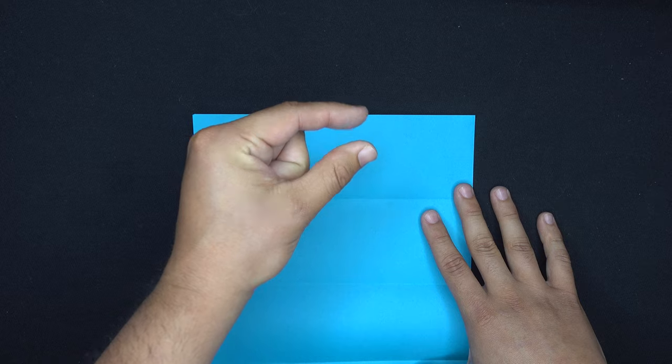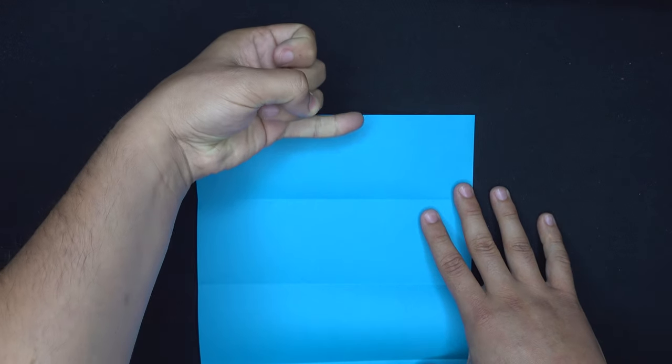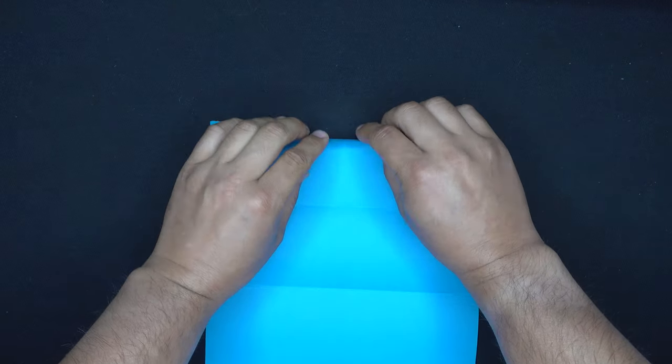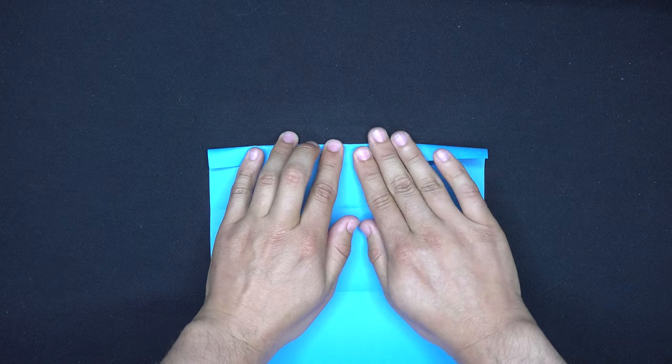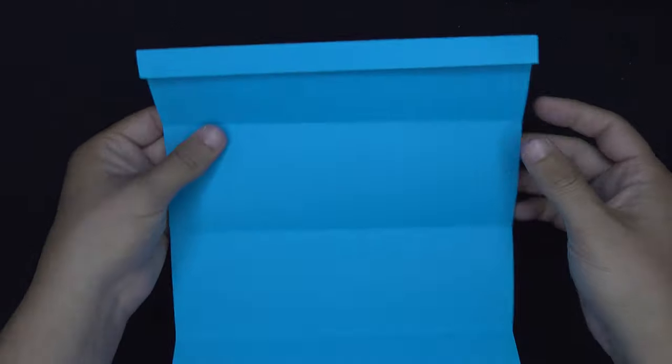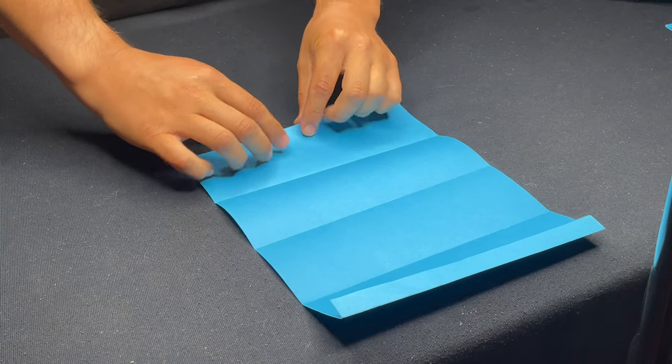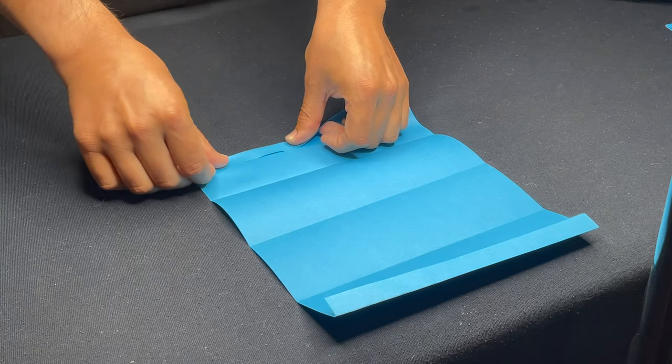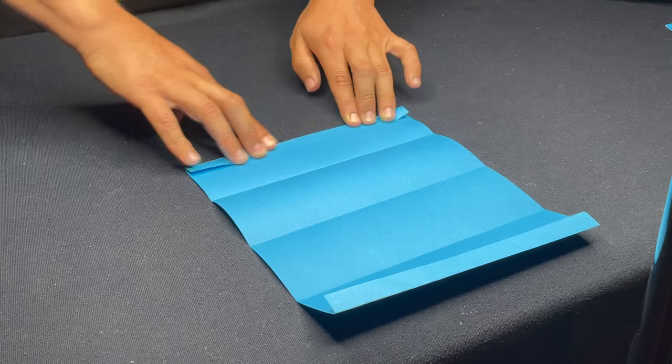We're going to take the top edge and fold it down about half of an inch or the width of your pinky. Take a small portion of the top and just fold it inwards like this and make a nice sharp crease on top. Do the same on the bottom folding it about half of an inch. Once you've done that, make a nice sharp crease on the bottom.